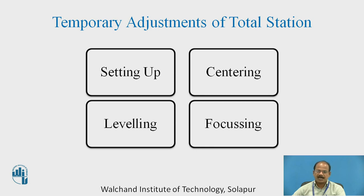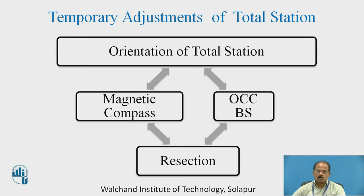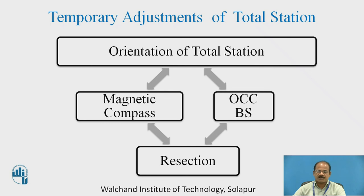Orientation means keeping the instrument exactly parallel to its first position at every succeeding station. We have already studied this even in the case of the plane table. There are two methods of orientation: one is orientation by a magnetic compass, and the other is orientation with the help of the resection method or backsighting method.